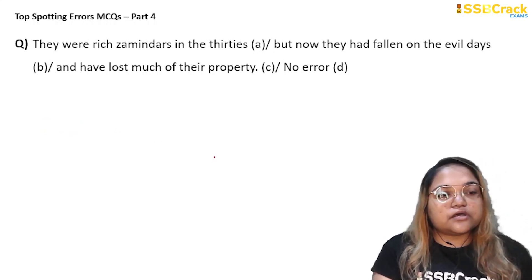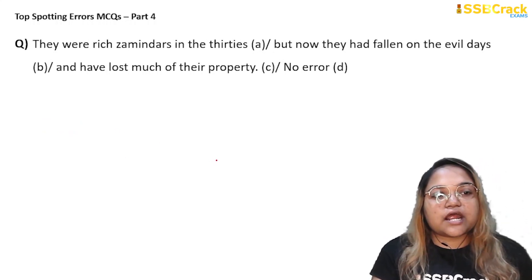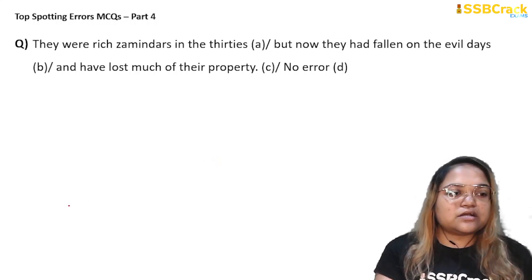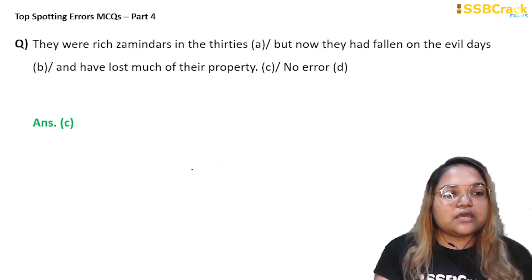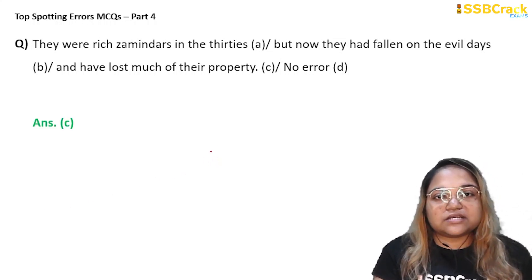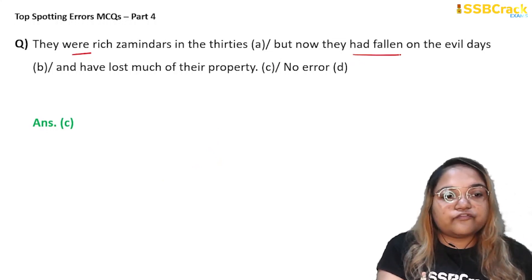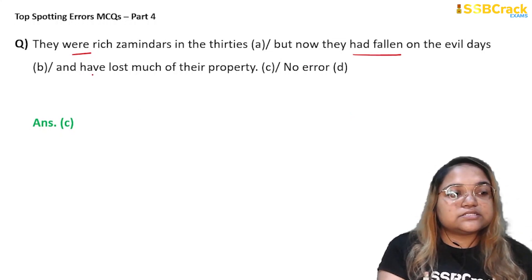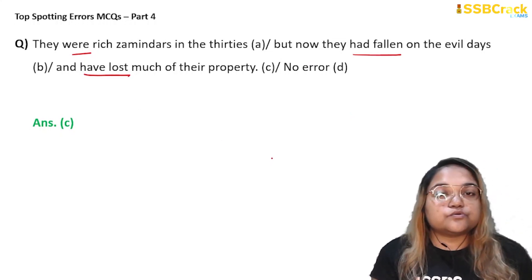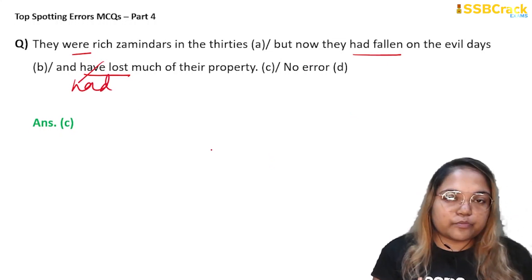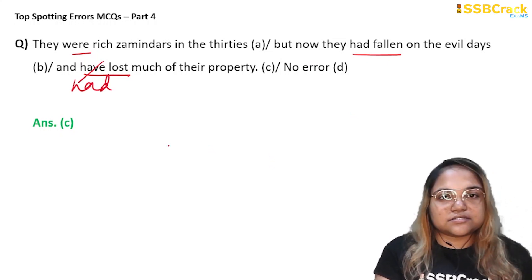Next question: 'They were rich zamindars in the thirties, but now they had fallen on evil days and have lost much of their property.' Reading carefully, the entire sentence is in past tense — 'were' (past), 'had fallen' (past perfect) — but in part C, 'have lost' uses present perfect, which is inconsistent. It should be 'had lost much of their property' to maintain past tense throughout. So part C has the error and the answer is option C.